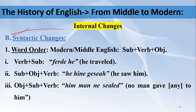Moving to the syntactic changes — the second type of changes which took place in the Middle English period. Syntactic change means grammatical change: changes in the grammatical structure of sentences or words. The first syntactic change is the change in word order. In Modern and Middle English, we have the word order Subject-Verb-Object. For example, 'they ate the mangoes' — 'they' is the subject, then the verb, then the object.